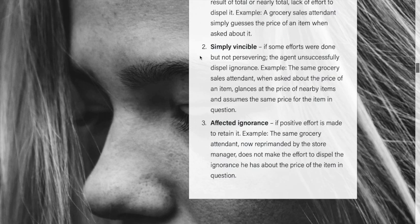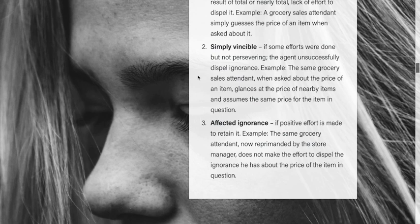The second degree is simply vincible ignorance: some efforts were made but not perseveringly, so the agent unsuccessfully dispels the ignorance. For example, the same grocery attendant when asked about a price glances at nearby items and assumes the same price for the item in question — some effort was made but it was not sufficient.